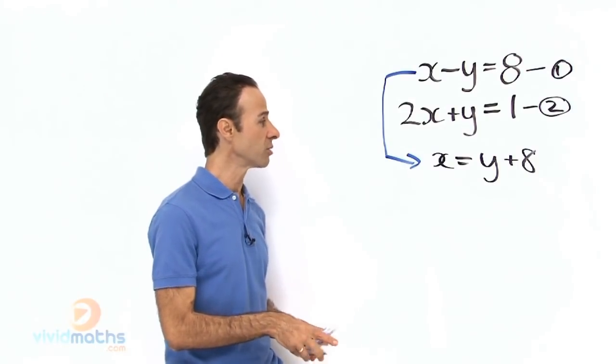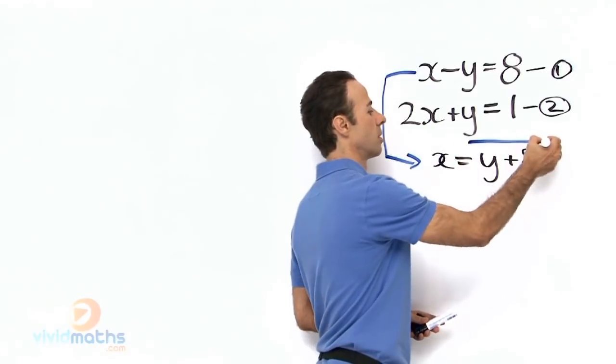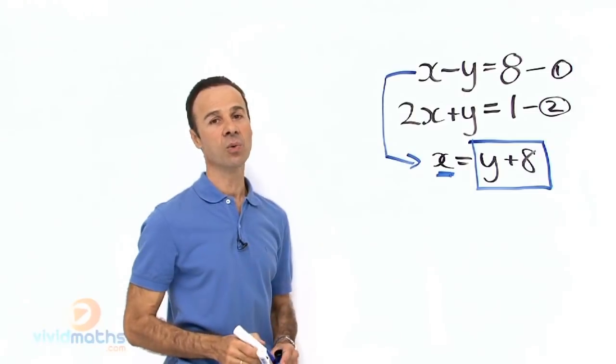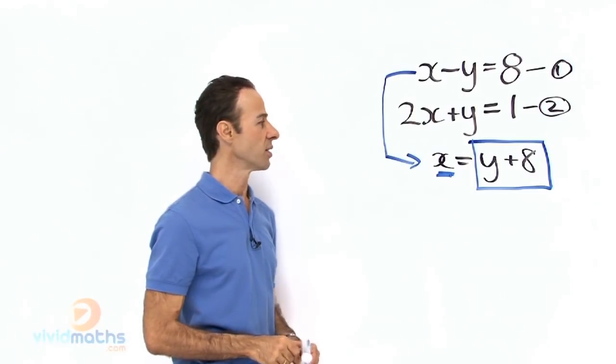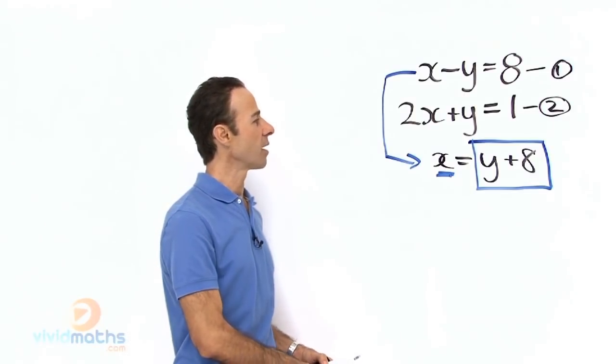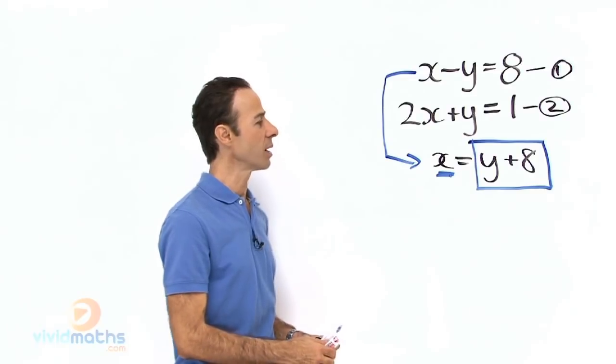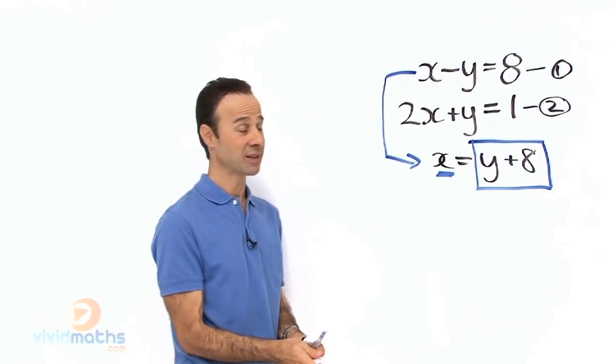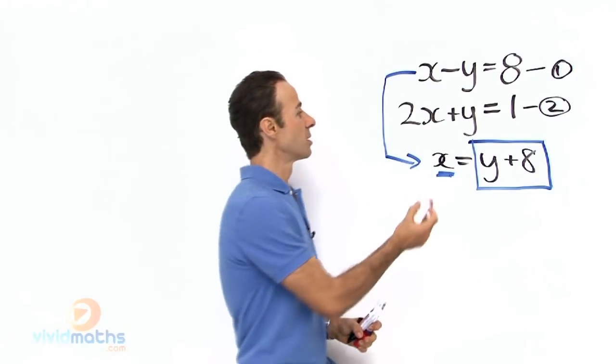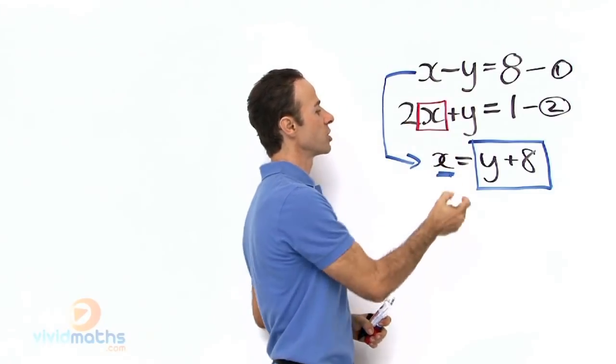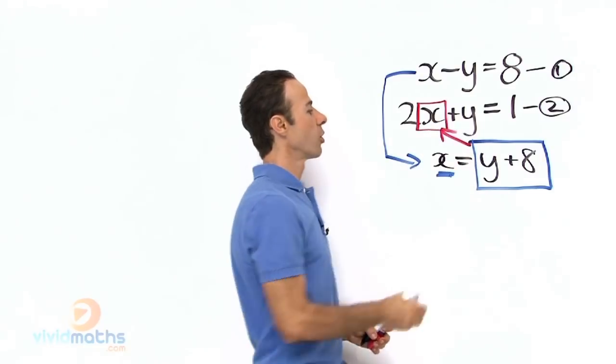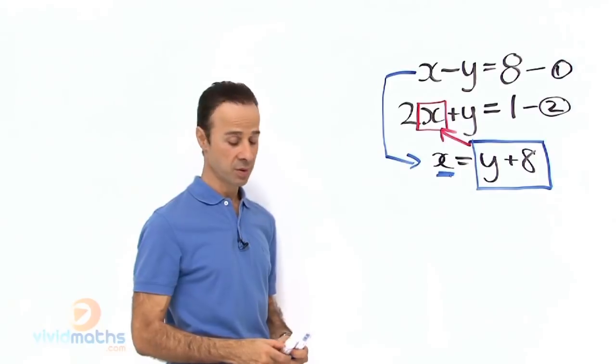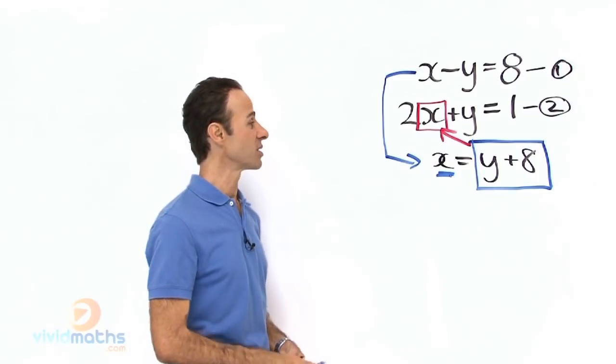So what we are going to do is we are going to substitute the y plus 8 for the x in the second equation. And as you can see in the second equation we have 2x plus y equals 1, so wherever we see x, what do we do? We substitute in that. So let us do that and discover what the answer is.